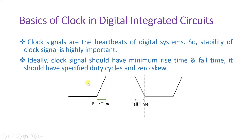In an ideal clock signal, this rise time and fall time should be zero. Practically it is not possible, so one can say it should be as minimum as possible. Now I'll explain skew of the clock.